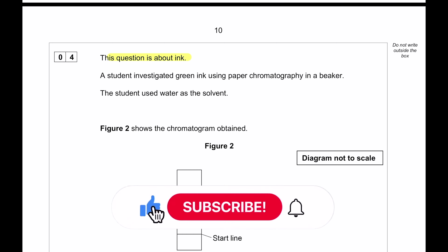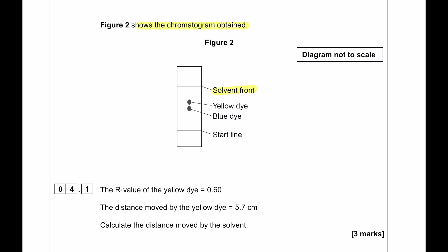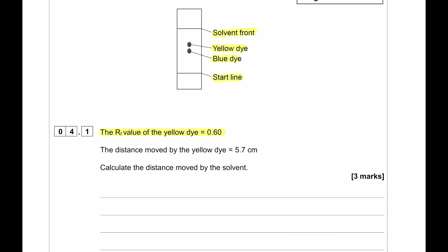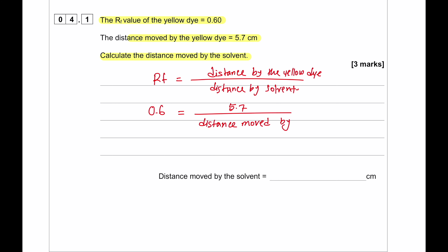This question is about ink. A student investigated green ink using paper chromatography in a beaker, using water as a solvent. The chromatogram shows the solvent front, yellow dye, blue dye, and the start line. The RF value for yellow dye is 0.6 and the distance moved by the yellow dye is 5.7 cm. RF = distance moved by dye ÷ distance moved by solvent, so the solvent distance = 5.7 ÷ 0.6 = 9.5 cm.